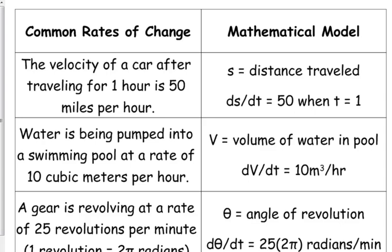Very common rates of change problems are volume problems. We're talking about the volume of the pool, and it's increasing by 10 cubic meters per hour, so that's your dV over dt. That's positive because it's being pumped in. If it's being pumped out, that would be a negative rate.